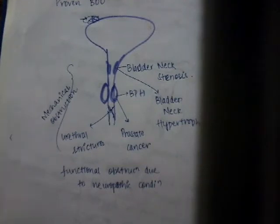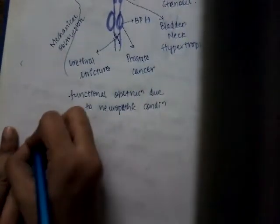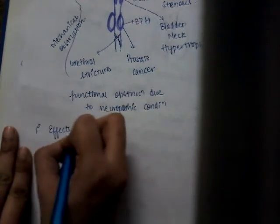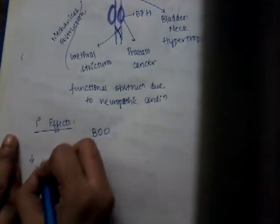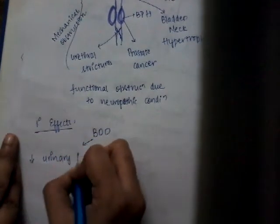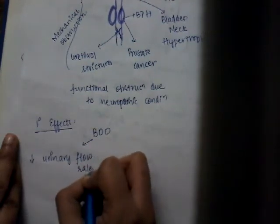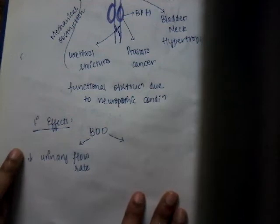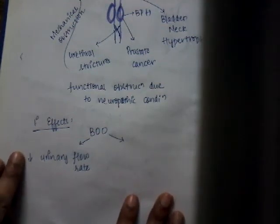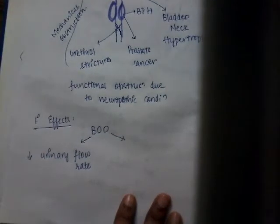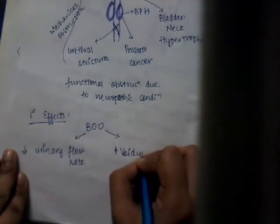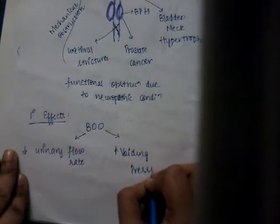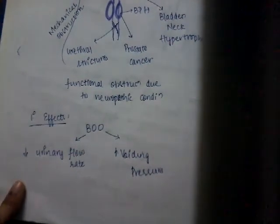What are the primary effects of bladder outflow obstruction? Number one, there is decreased urinary flow rate — because of the obstruction, despite pressure, flow is reduced. Number two, there is increased voiding pressure. So the primary effects are: increased voiding pressure combined with decreased urinary flow rate.